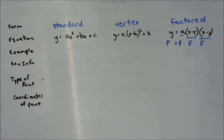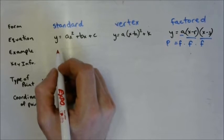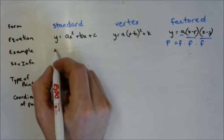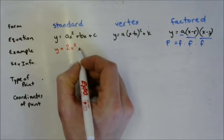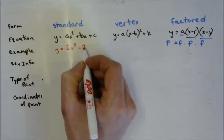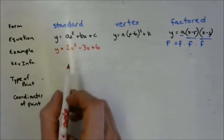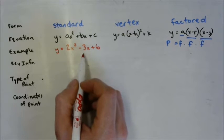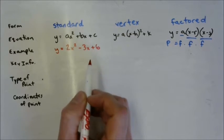We'll get into why they're called what they're called, but first let's give an example of each. An example of something in standard form — it can be as simple or as complicated as you'd like — so we'll write y equals 2x squared minus 3x plus 6. It has a coefficient for the x squared term, coefficient for the x term, and a constant of positive 6.